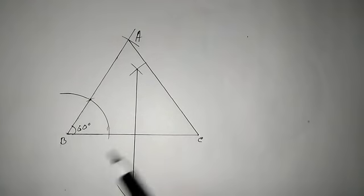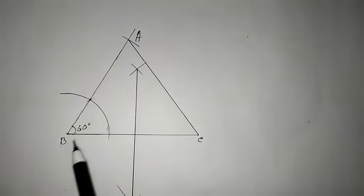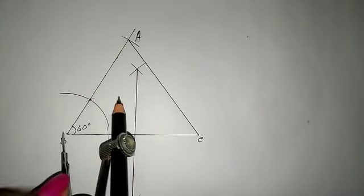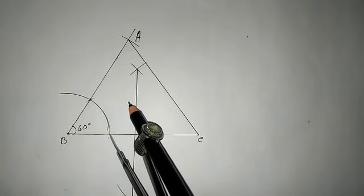Now we have to draw the locus of points which is equidistant from AB and BC. That means we have to bisect angle B.